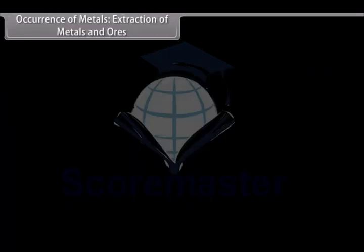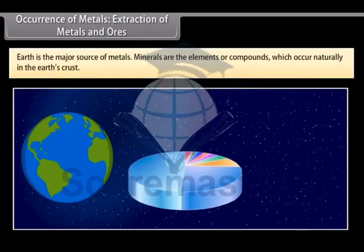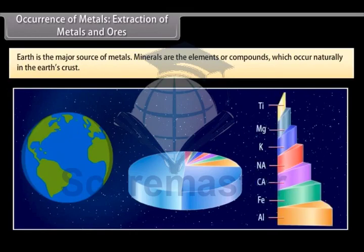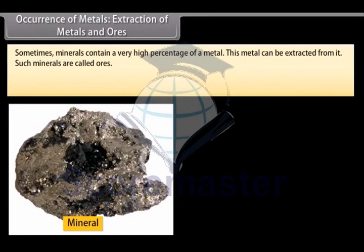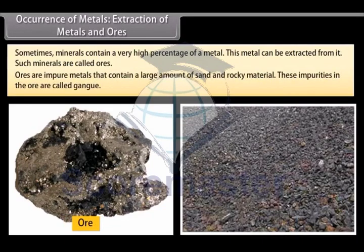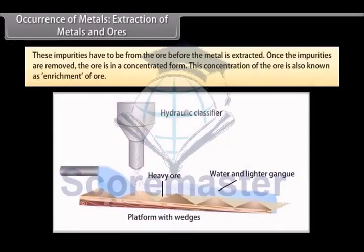Occurrence of Metals. Extraction of Metals and Ores. Earth is the major source of metals. However, seawater also contains some soluble salts. Minerals are the elements or compounds which occur naturally in the earth's crust. Sometimes, minerals contain a very high percentage of a metal. This metal can be extracted from it. Such minerals are called ores. Ores are impure metals that contain a large amount of sand and rocky material. These impurities in the ore are called gangue. These impurities have to be removed from the ore before the metal is extracted.